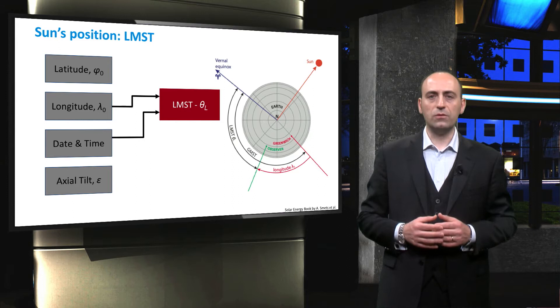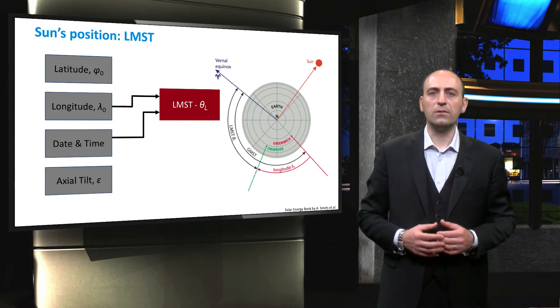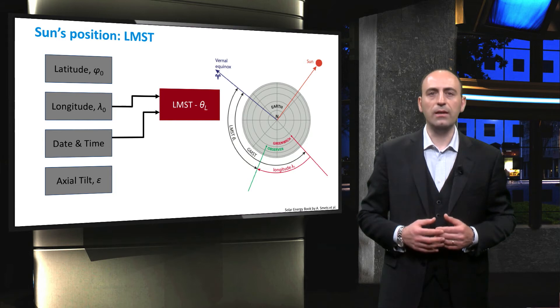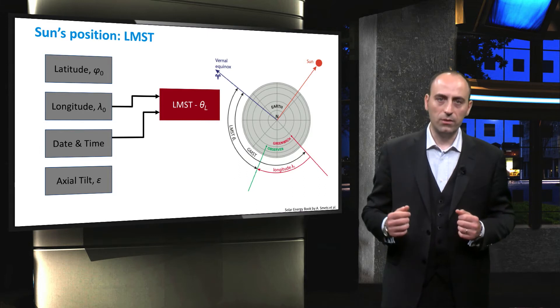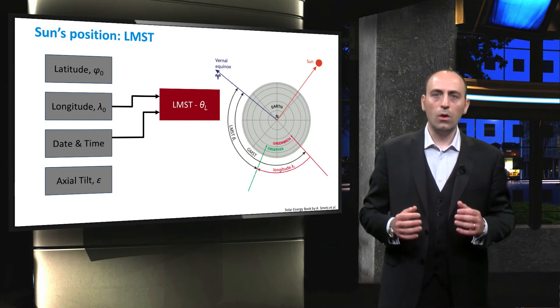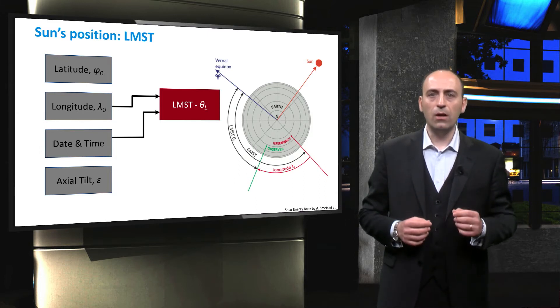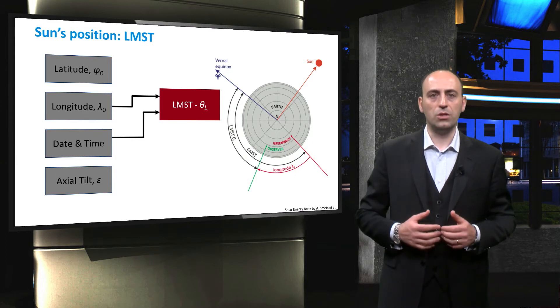The first operation to perform is obtaining the local mean sidereal time, shortened to LMST and represented with theta L. Looking at the picture where the Earth is seen from the north pole, the local mean sidereal time is the angle between the vernal equinox, which is used as a reference, and the observer meridian in green.